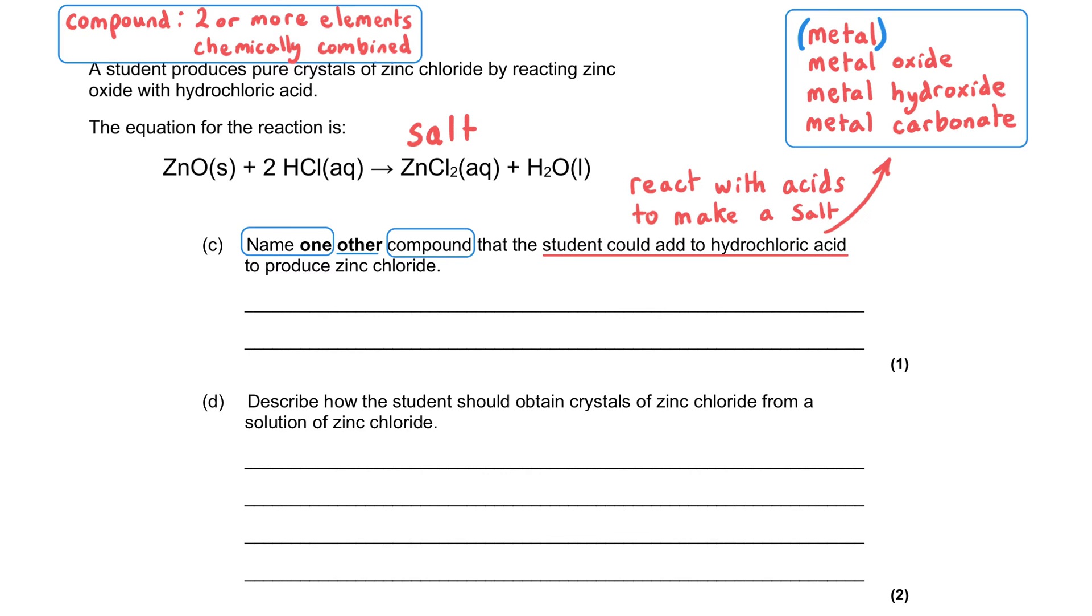We've been asked to name another compound, and we're already adding zinc oxide, so that rules out the oxides. We could use a metal hydroxide or a metal carbonate. Since we're adding it to hydrochloric acid to produce zinc chloride, we could choose zinc hydroxide or zinc carbonate. Either of those is fine for our one mark.